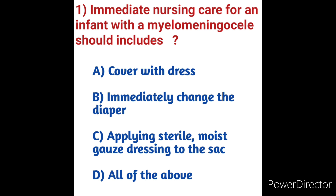Surgical management to close the defect is done within the first 48 hours to preserve neural tissues and prevent infection. If managed with sterile techniques, immediate surgical management is not required. The immediate nursing care for an infant with myelomeningocele is applying sterile moist gauze dressing to the sac, keeping the infant in prone position, and using an incubator or radiant warmer. Do not cover with a dress as it will cause contamination. Option C is the correct answer.